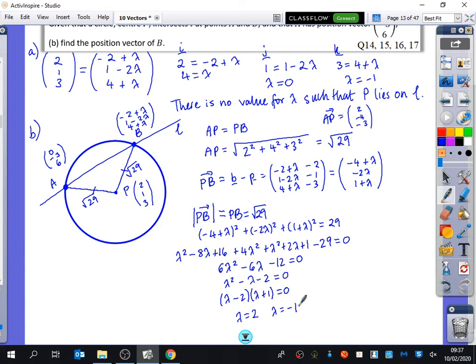So, now we figure out which one's for B, and which one's for A. So, A is (0, -3, 6). So, what does it look like lambda is for A? You've got -2 + lambda is 0. So lambda is 2. So, this one is for A. So, when lambda equals minus 1, we get that the position vector of B is going to be (-2 + lambda, 1 - 2 times lambda, and 4 + lambda). So, it's (-3, 3, 3).